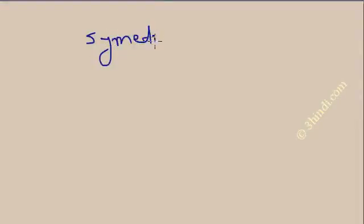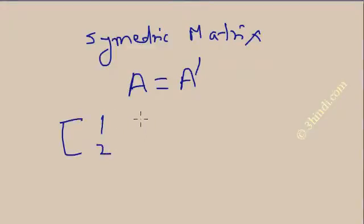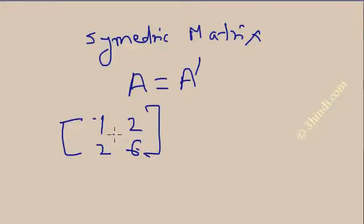For a symmetric matrix, the transpose of matrix A equals A. Here is an example of a symmetric matrix: suppose A is [1,2; 2,6]. You can see this is a symmetric matrix — the leading diagonal elements, and the elements across this diagonal are mirror images of each other.